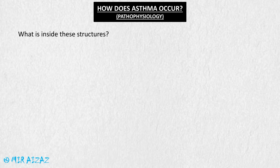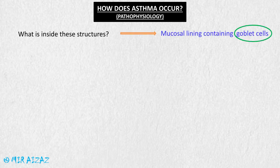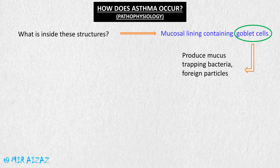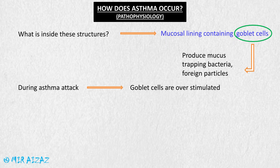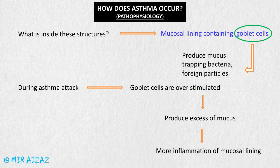Inside the bronchi and bronchioles, the mucosal lining contains goblet cells. The goblet cells are responsible for the production of mucus, which helps in trapping bacteria and foreign particles and protects the delicate tissues of the lungs. But during an asthma attack, these goblet cells are over-stimulated — they produce excess mucus, which increases inflammation of the mucosal lining and further decreases the inflow of air.